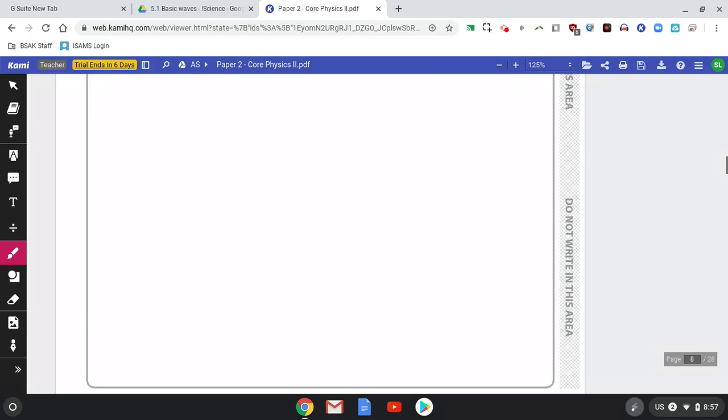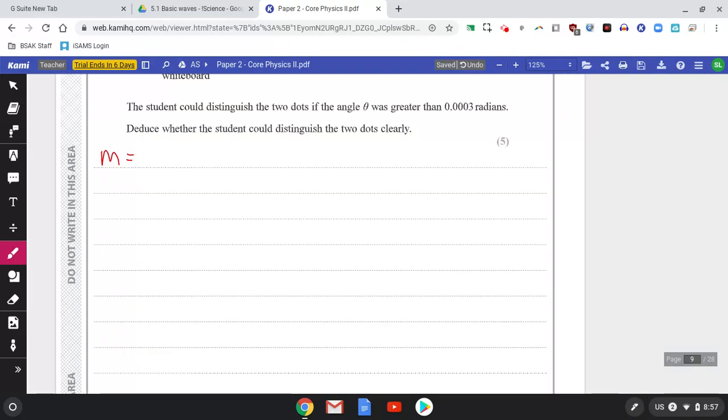Right, magnification is... how much is it going to get bigger? The distance between the dots. Magnification is, what have we got? Image distance 75 over 9. So the magnification in this case is 8.33.